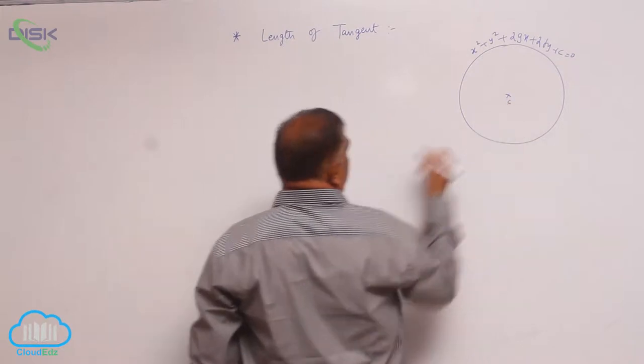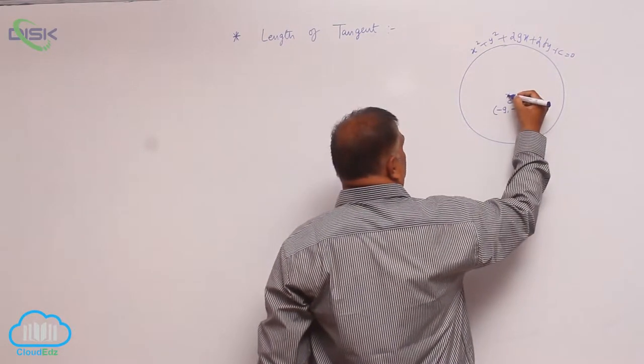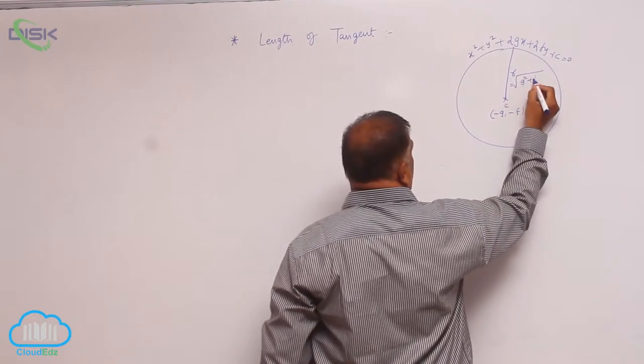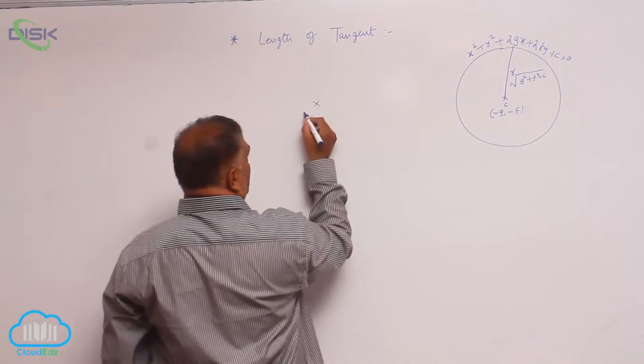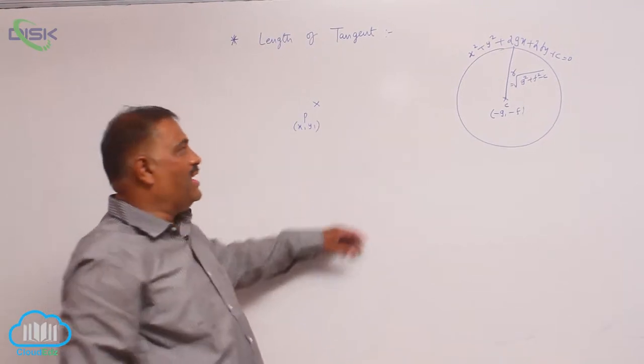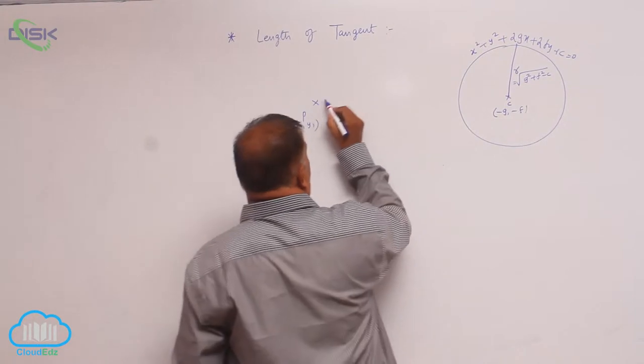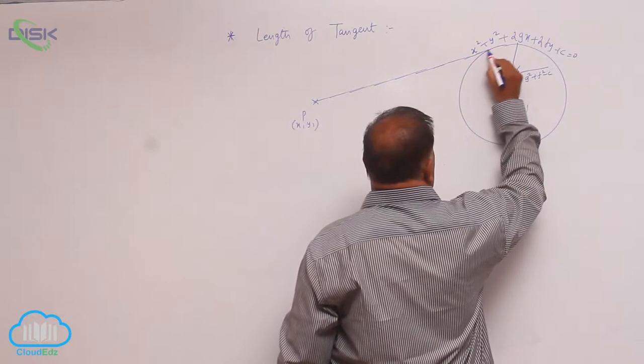Center you know this is minus g comma minus f and the radius is r, that is root of g square plus f square minus c. Suppose you take any external point P x1 comma y1. The distance between the point P x1 y1 to the point where it touches the circle equation, let us say.